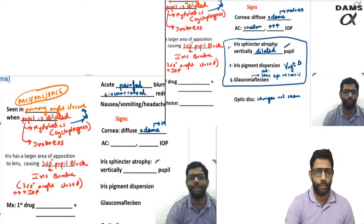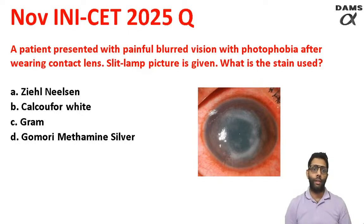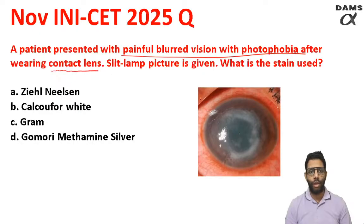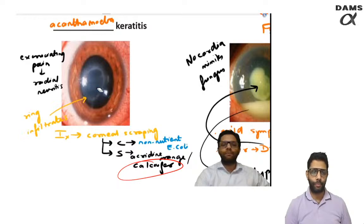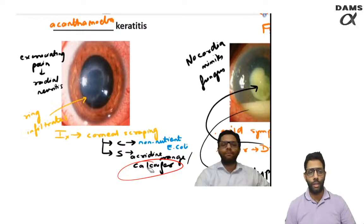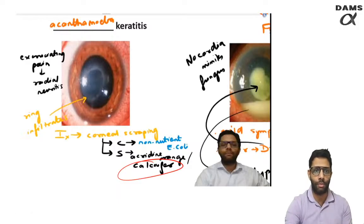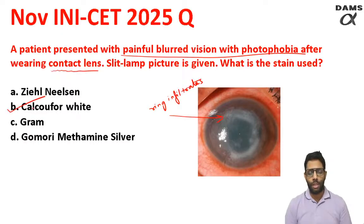Acute red eye is a very hot topic. The second clinical question — again acute red eye — the patient was having painful blurred vision with photophobia, i.e., intolerance to normal light, after wearing contact lens. If no slit lamp picture is given, the most common contact lens associated organism is Pseudomonas, for which Gram stain is used. But this picture is showing ring infiltrates. Ring-like infiltrates with keratitis is suggestive of acanthamoeba keratitis. For investigation, corneal scraping is sent for culture on non-nutrient E. coli agar, and stained with acridine orange and calcofluor white.